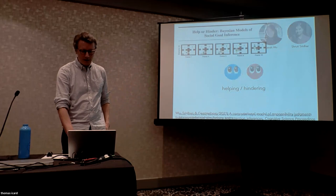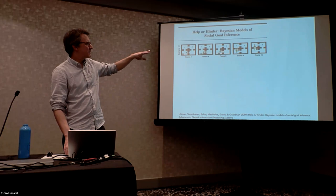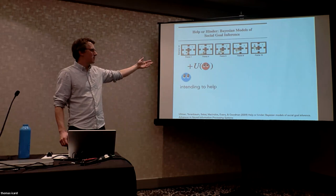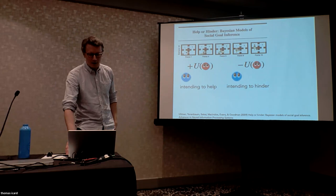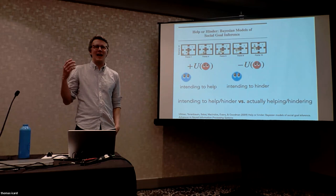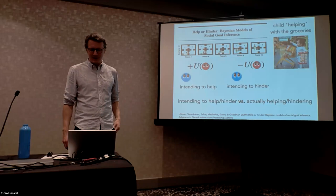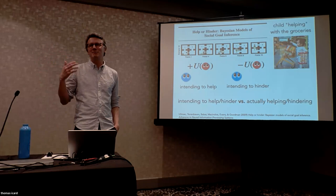We're interested in helping and hindering, which has a long tradition in psychology — for example, Tom Ullman's work from 2009 using simple grid game environments to ask participants to infer whether an agent's goal was to help or to hinder. The basic idea was that intending to help means placing positive utility on the other person's utility, and intending to hinder means placing negative utility on it. But one key observation is that intending to help or hinder is not the same as actually helping or hindering. To judge whether somebody actually helped or hindered is a counterfactual claim: was it better than it would have been otherwise?